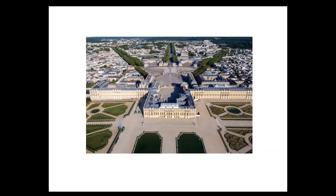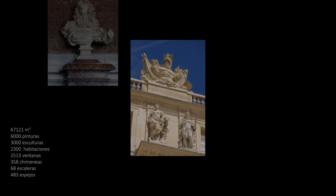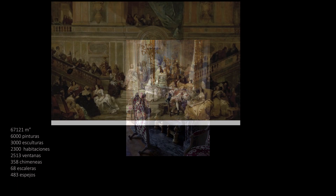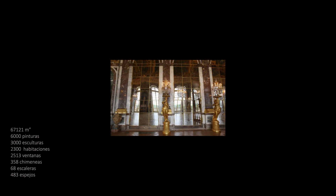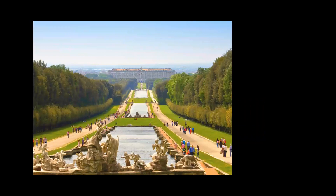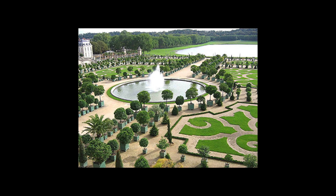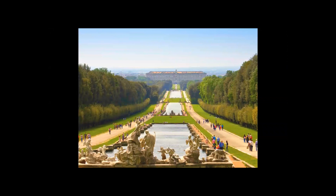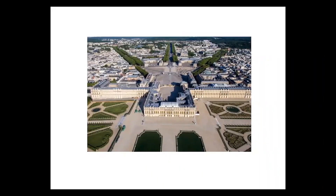El castillo funciona como una estructura abierta de 67.121 metros cuadrados que alberga 6.000 pinturas, 3.000 esculturas, 2.300 habitaciones, 2.513 ventanas, 358 chimeneas, 68 escaleras, 483 espejos. Sus jardines, en más de 800 hectáreas, con el diseño del paisajista Lenot, actualmente los cuidan 60 jardineros. Tienen 20 kilómetros de caminos custodiados por más de 200.000 árboles. Una canalización de 35 kilómetros cuadrados permite que sus 55 estanques y fuentes permanezcan con agua en este hermoso paisaje.